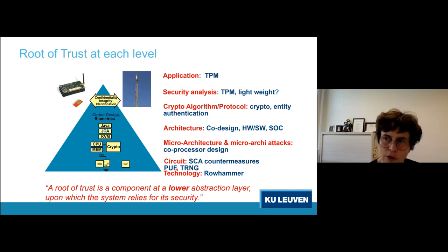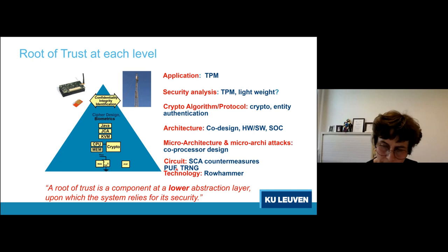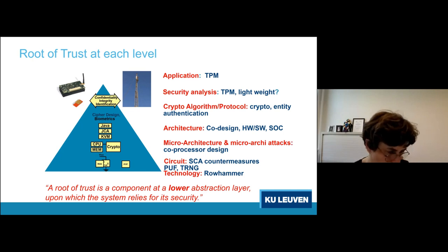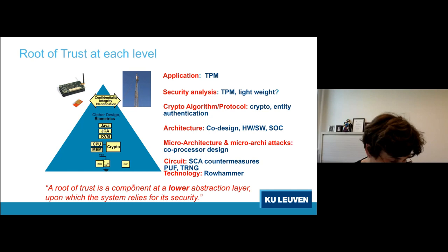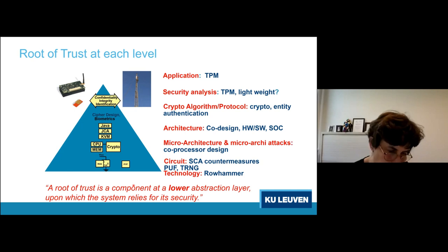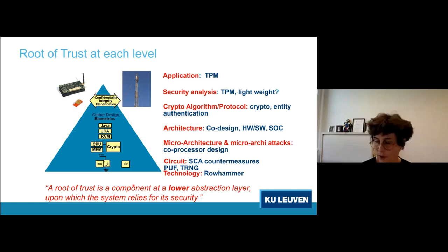Each component is itself a root of trust for something higher up. There is always a lower abstraction layer that is the root of trust upon which the system relies for security. You need composition rules — not just the root of trust itself, but a way of specifying how it can be used. The environment matters, and an AES engine that is perfectly secure in one setup might need all kinds of countermeasures against EM attacks in another. The attacker model counts.